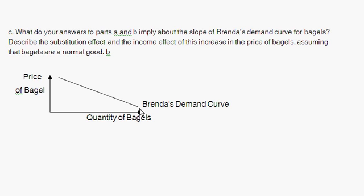The income effect usually is not particularly big for most goods and services — the caveat being if spending on those goods takes up a big part of one's income. In this bagel example with Brenda, bagels take up a large part of her breakfast consumption. With the increase in bagel prices, she doesn't really substitute from bagels into coffee. Before, when bagels were $2, she bought two bagels and two coffees. When the price of bagels goes up, she just reduces her consumption of bagels rather than substituting into coffee — she simply reduces her total consumption. Hopefully that was helpful. Thanks, and have a good day.